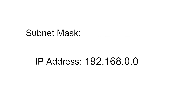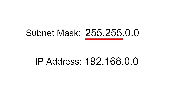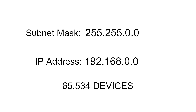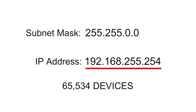Another common subnet mask is 255.255.0.0. The first two parts of the address are for the network and cannot be changed. The following two parts are for the unique device ID. This gives us many more devices — 65,534. And as before, the very first and very last available addresses are used for the subnet ID and the broadcast. This would give us a range of 192.168.0.1 to 192.168.255.254. Of course, this range is given as an example and may well be different.